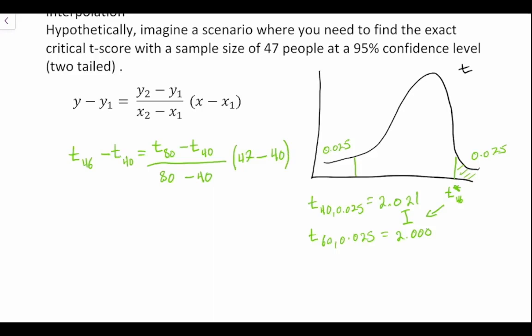Okay, that is how we're going to operationalize this equation. So we don't know t at 46, so t at 46 minus t at 40, which is 2.021, is equal to (2.000 minus 2.021) divided by 20 times 6, or times 7—47 minus 40.